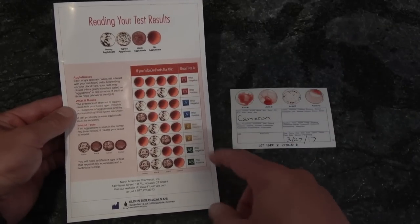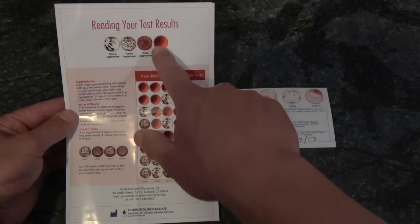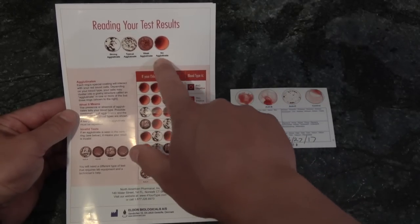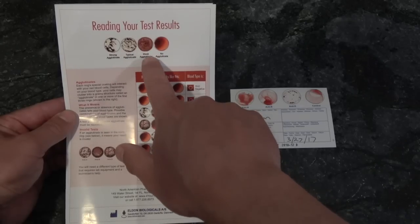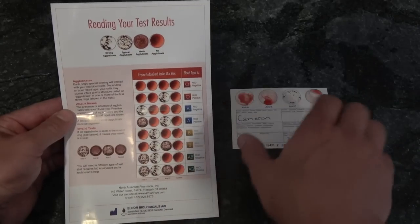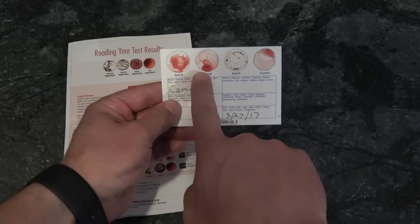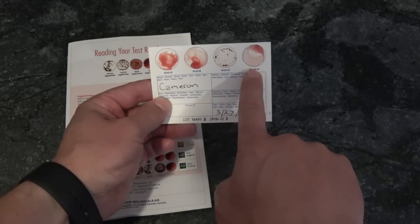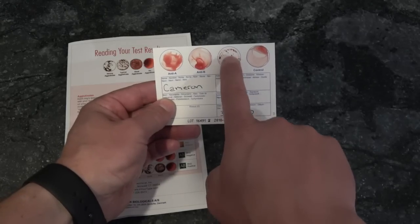And the results are very easy to read using the included chart. This is what you're looking for in the dots. This is a negative result, and these are positive results. If you get this, you probably want to redo the test. But as you can see here, I've got negative, negative. That's the control. That's negative. And that's a positive result. That's agglutination right there.